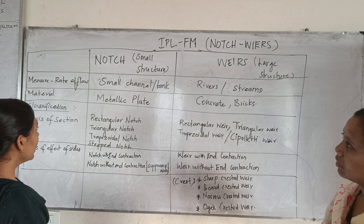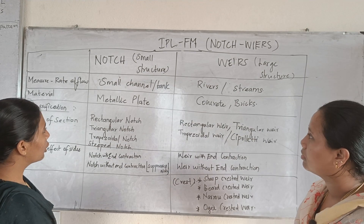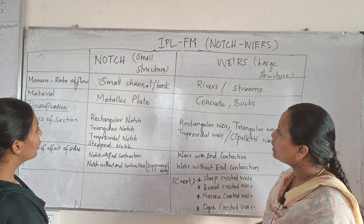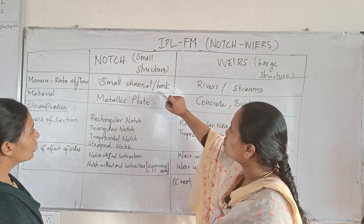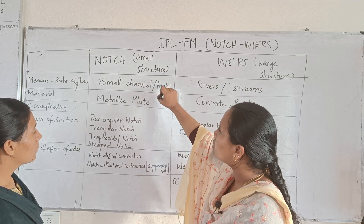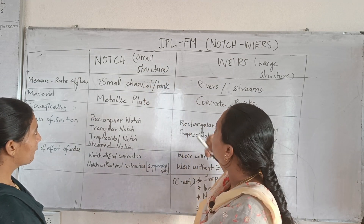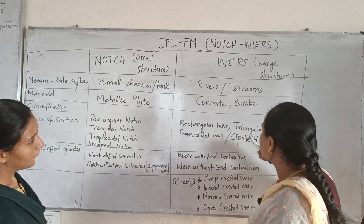Next, we consider rate of flow. Rate of flow is denoted by small 'r'. If we take a tank, we consider the rate of flow — the rate of flow is small 'r'.